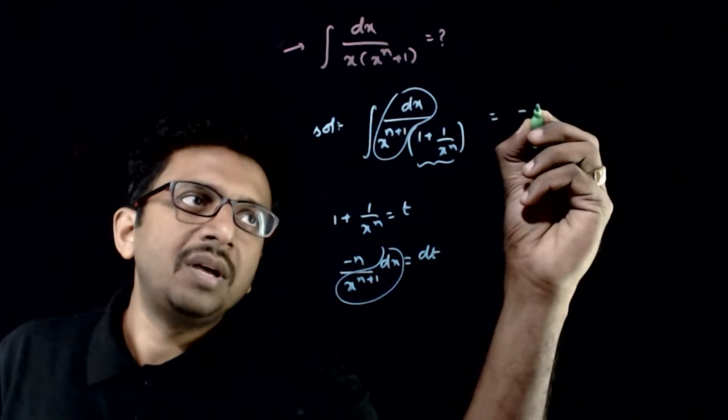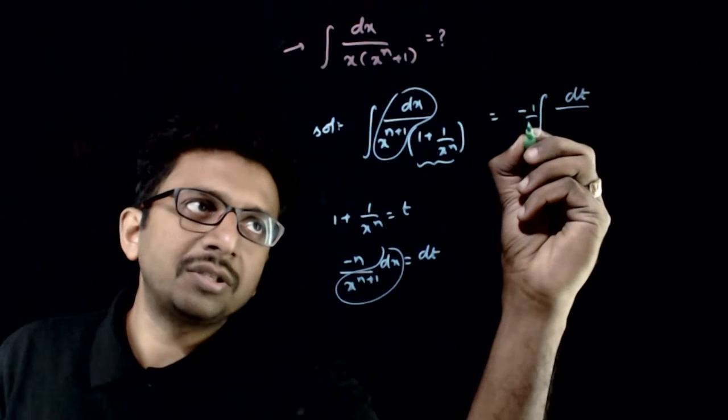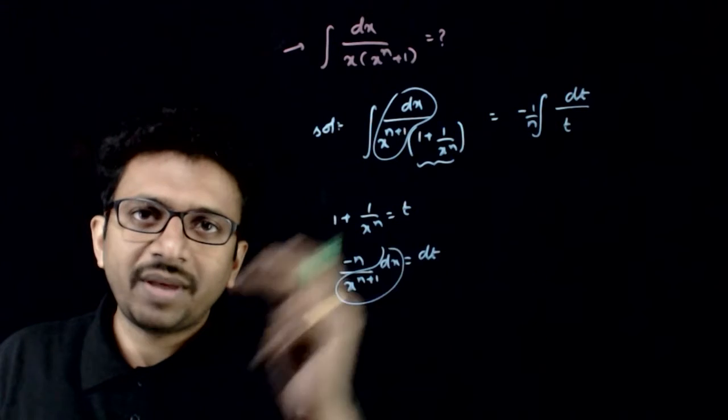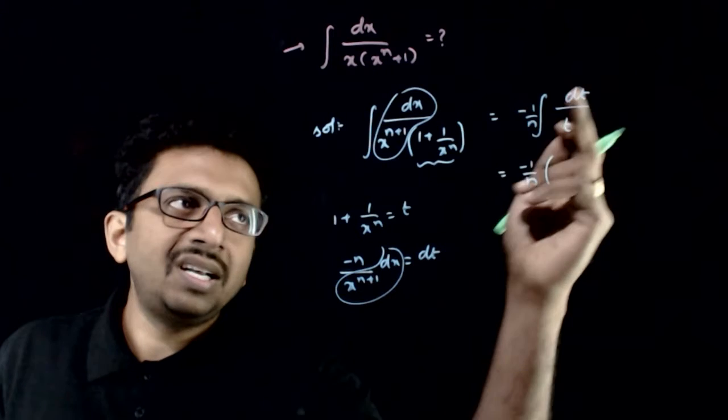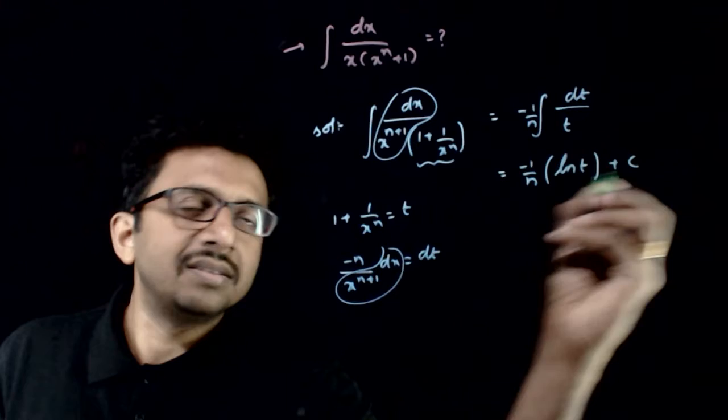That is equal to minus integration of dt by n. Again, n is also constant, so minus 1 by n times t. 1 plus 1 by x power n is t, that is equal to minus 1 by n times integration of dt by t is ln t plus c.